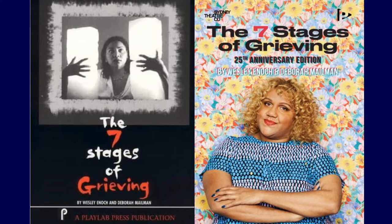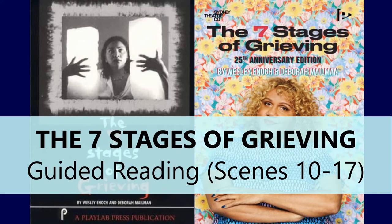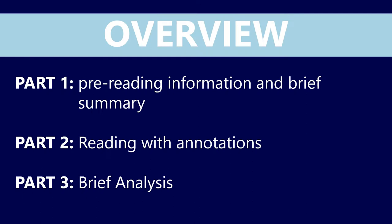Welcome back to another episode of the Six Peas Podcast. We're going to continue with our look at the seven stages of grieving by today going through scenes 10 to 17. As is custom, we're going to start with some pre-reading information and a brief summary of those scenes.